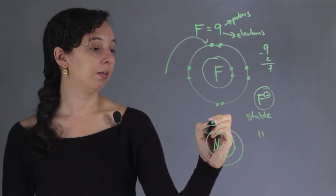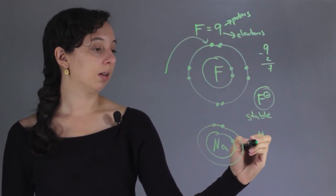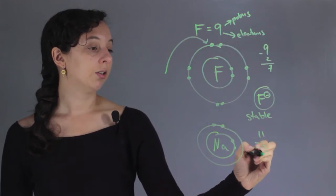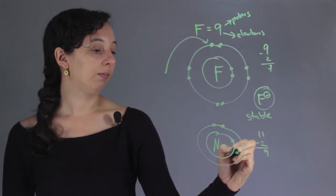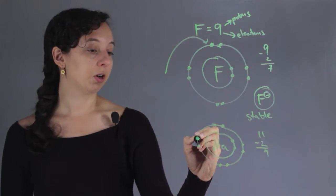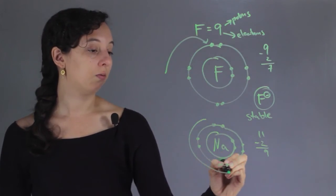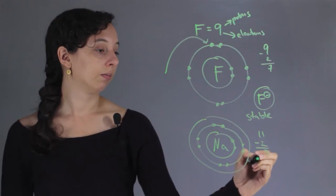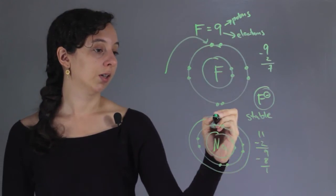Now we have the next shell that's filled with 8, so 11 minus 2 is 9. We're going to completely fill up this shell. And that means we go to the third shell, because we have one left over.